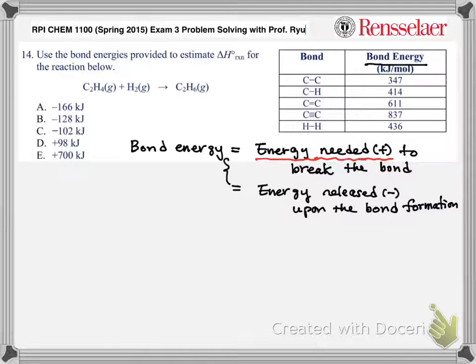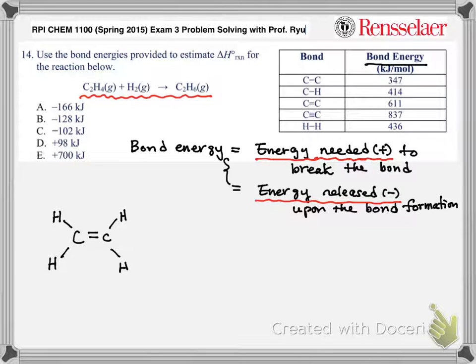Now looking at these chemical structures, we need to write out the detailed molecular structure. C2H4 means carbon-carbon with four hydrogens, and there should be a double bond there. This is what we call ethene or ethylene. Then hydrogen has an H-H bond.